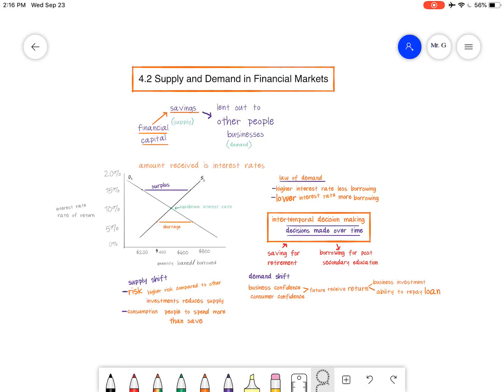Hi, it's Mr. G here, and today we're going over 4.2 Supply and Demand in Financial Markets. So like I mentioned in previous videos, this whole chapter is about looking at supply and demand and applying it to different kinds of situations. In this case, we're applying it to the financial markets to get a better understanding of what's going on there.